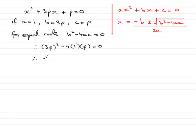Clean this up. 3p all squared is 9p squared, and minus 4 times 1 times p is going to be minus 4p, and that equals 0.